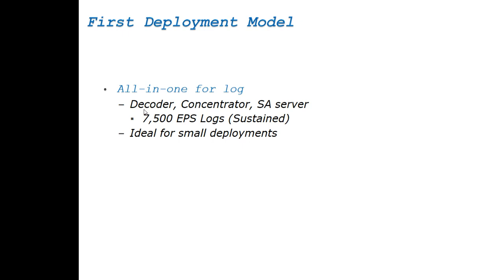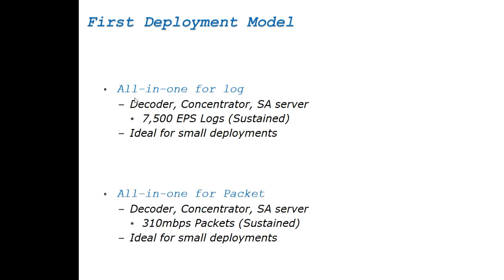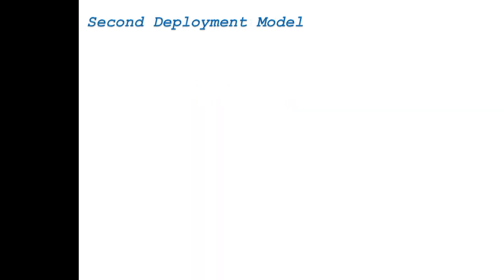Within this first deployment model, there is also an 'All-in-One for Packet' variant. It contains the same concept but with a Network Decoder, Concentrator, and Analytic Server. If buying an All-in-One appliance for packet capture, that solution is capable of capturing 310 Mbps of packets. This is also used for small-scale deployments. If you have a requirement exceeding 7,500 events per second for logs, or more than 310 Mbps for packets, you move to the second deployment model.